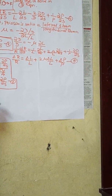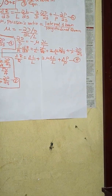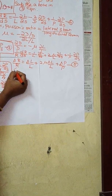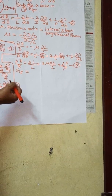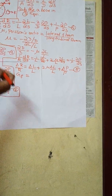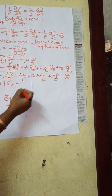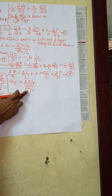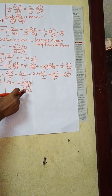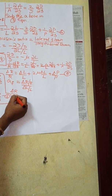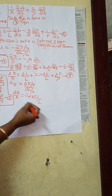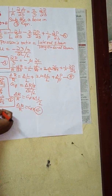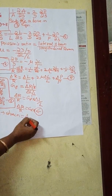We are deriving all this in order to find the gauge factor of the strain gauge. The gauge factor is defined as the ratio of per unit change in resistance to per unit change in length: GF = (ΔR/R) / (ΔL/L). So ΔR/R = GF × (ΔL/L) = GF × σ, where σ = ΔL/L is called the strain.